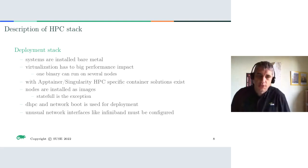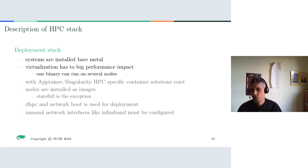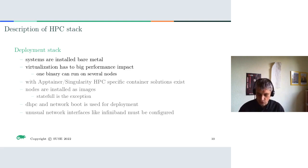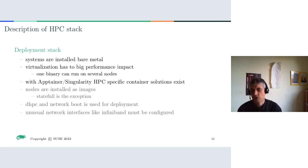In the HPC stack, systems are always installed and run on bare metal — simulations and all compute work run directly on hardware. There is no virtualization because you would lose performance, and you are buying the system specifically to get the highest performance. Also, virtualization is not really necessary in HPC: virtualization is there to split a node into several resources, but in HPC it's the other way around — you have one binary running across multiple nodes. There is also a container solution for HPC called Singularity, where you create your environment and binary and push it to the nodes.